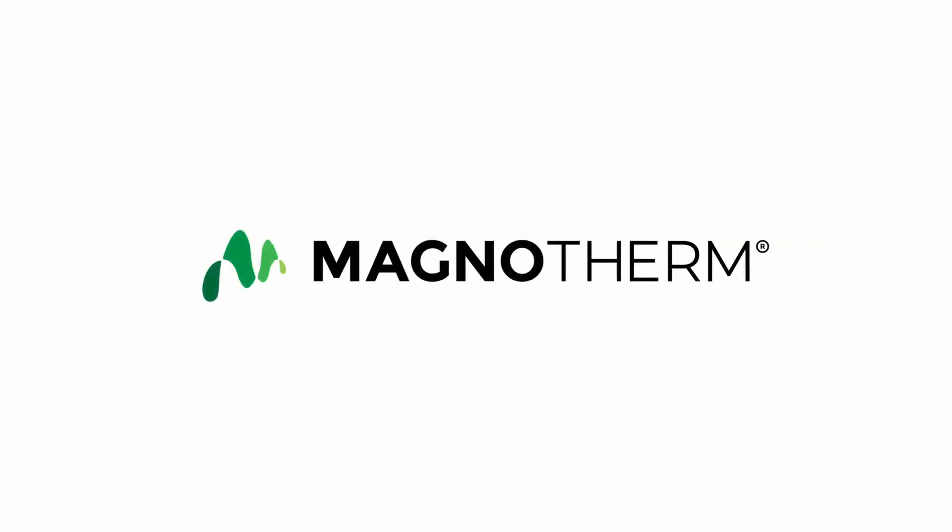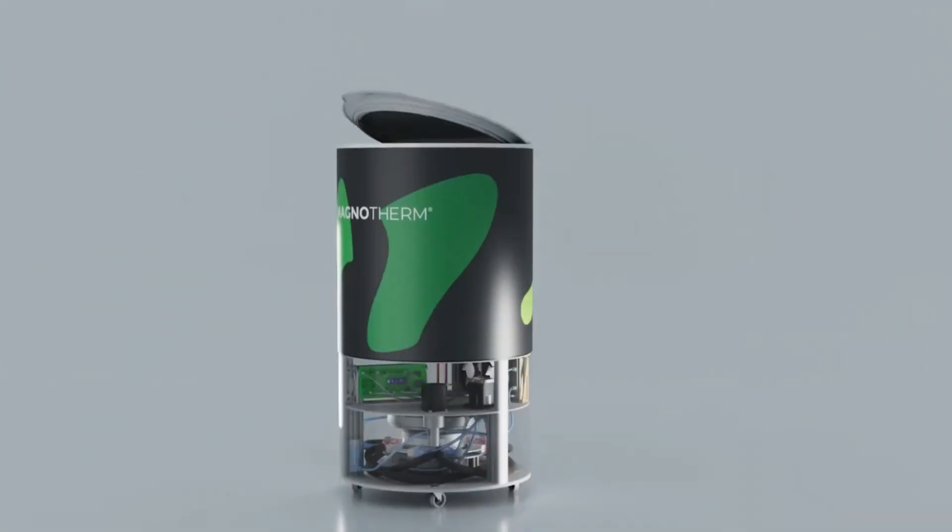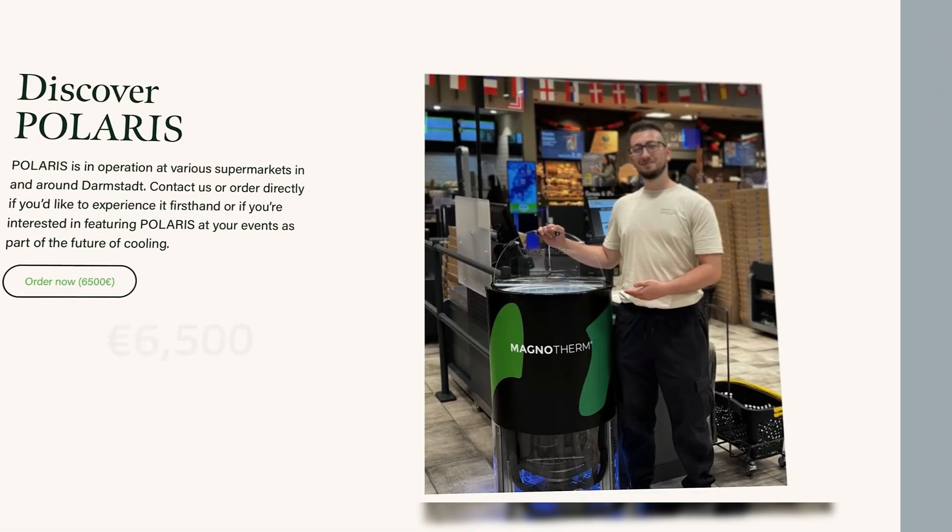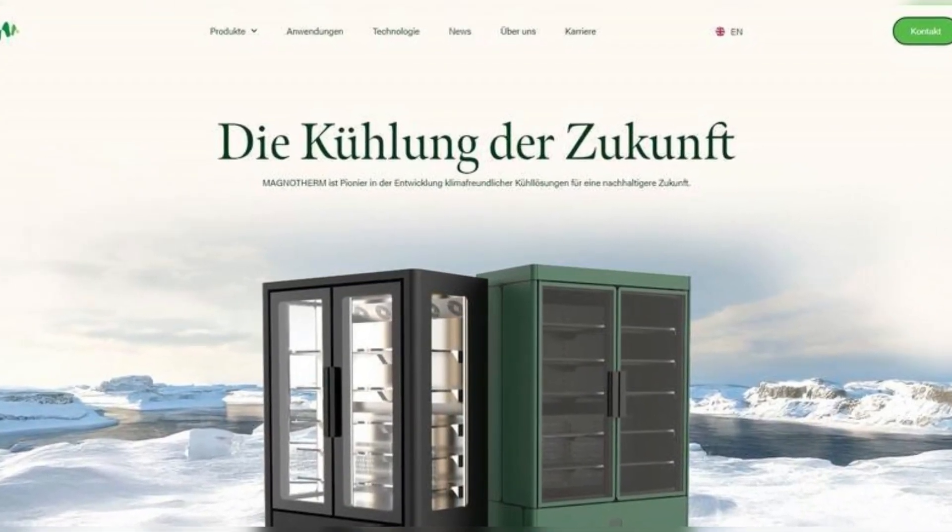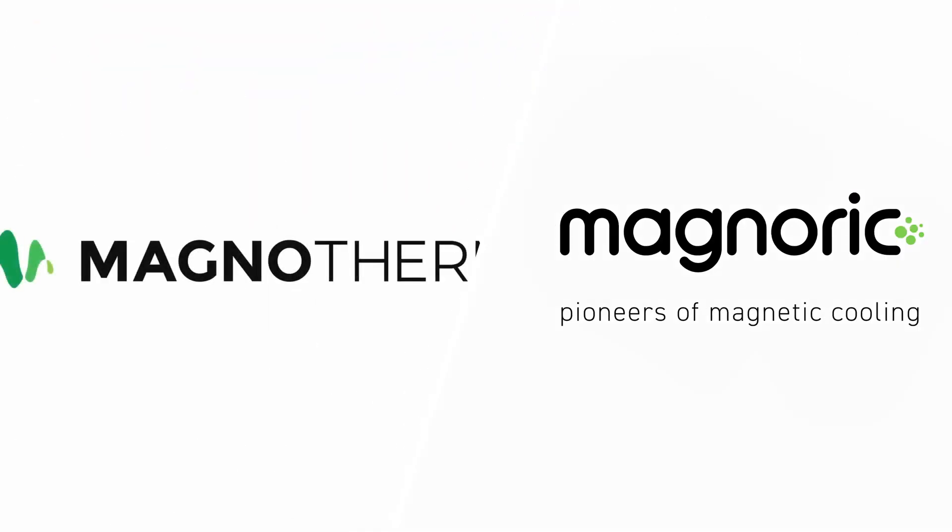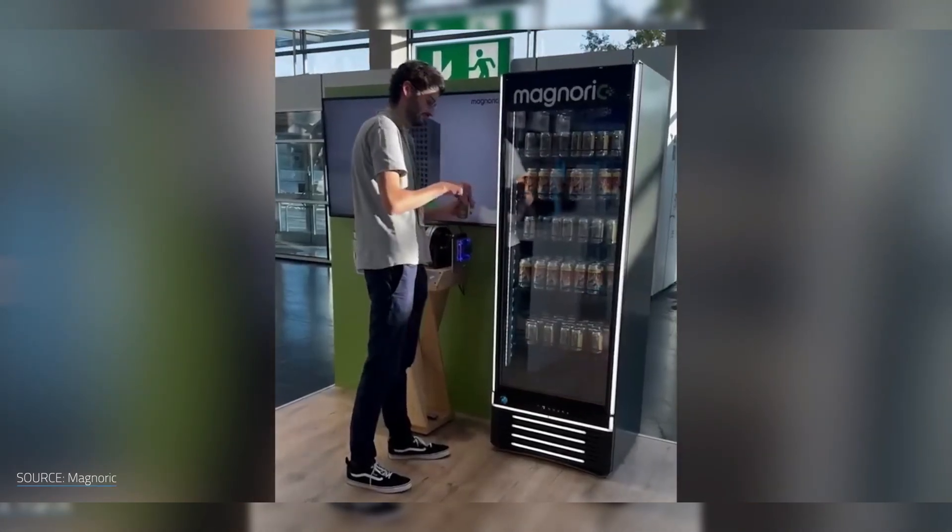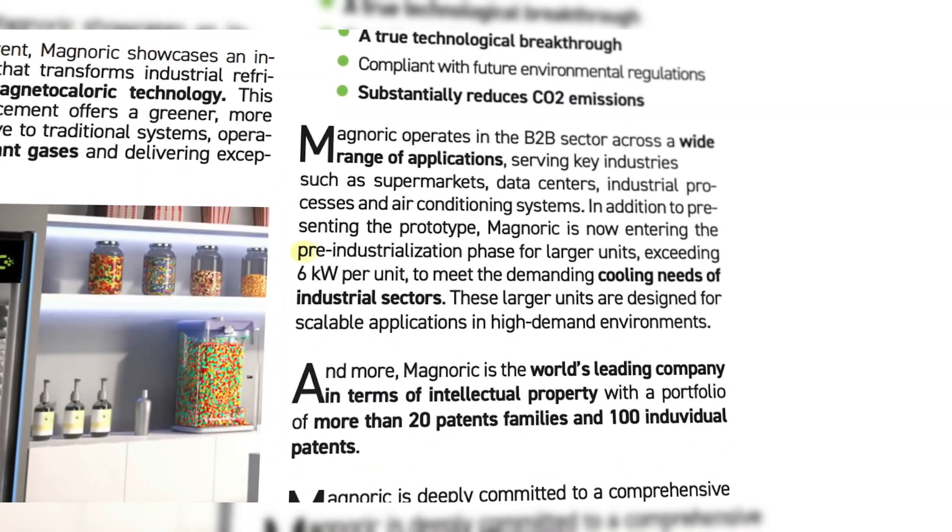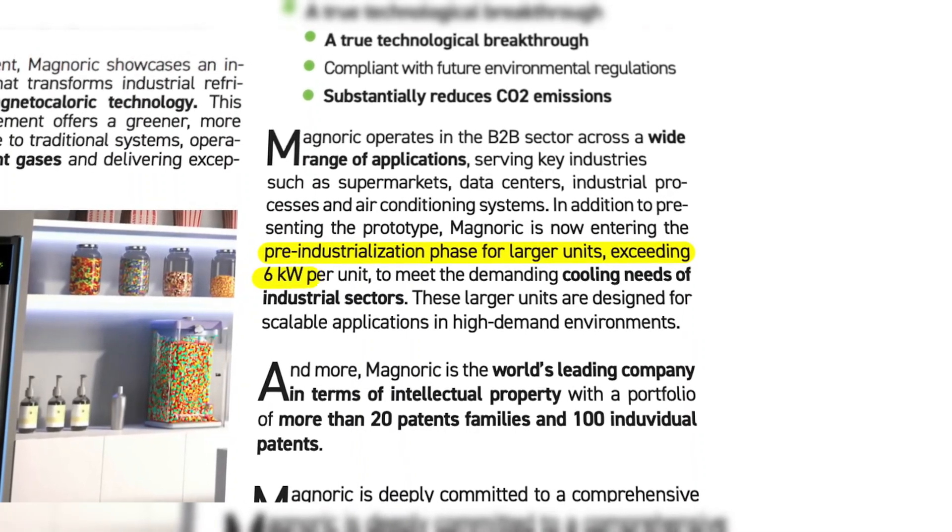Not far away, MagnoTherm, based in Germany, already sells magnetocaloric chillers. Their entry-level model goes for around 6,500 euros. Their flagship product, the Eclipse, is a sleek two-door unit for retail and medical use. Both companies are targeting large-scale systems, for now. Home fridges are still too costly, bulky, or low in performance. But that's why labs like Ames are pushing optimization to shrink this tech and make it accessible.